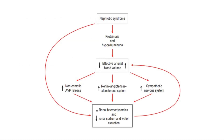This is a flowchart showing how ascites occurs in nephrotic syndrome. First there is proteinuria and hypoalbuminemia. This reduces the effective arterial blood volume, then activates the RAAS and sympathetic nervous system, causing sodium and water retention.